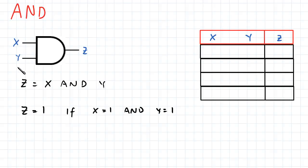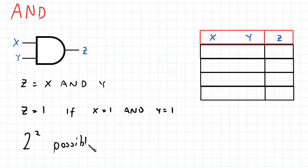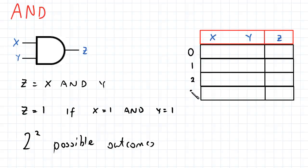Just like in many other cases, there's going to be a truth table associated with AND. We have two inputs, which means we have 2 to the power of 2 possible outcomes. Recall that truth tables take into account every single possible outcome. So we will have rows 0, 1, 2, and 3.